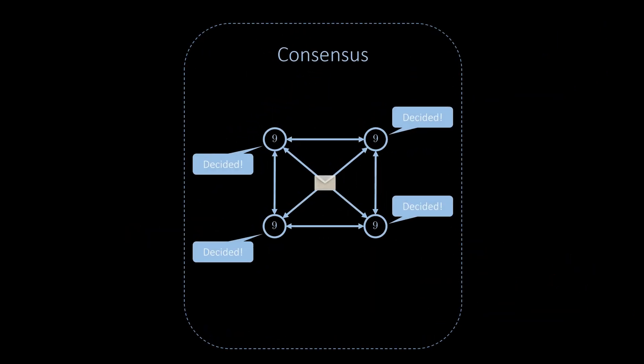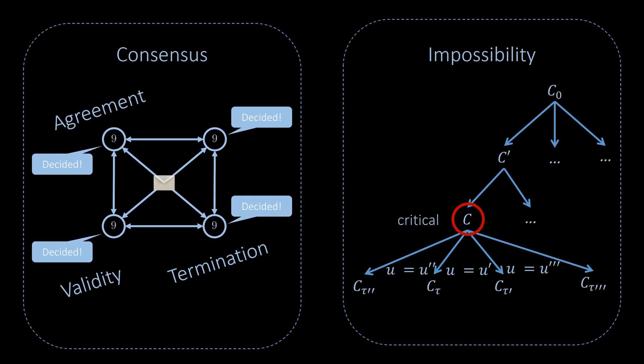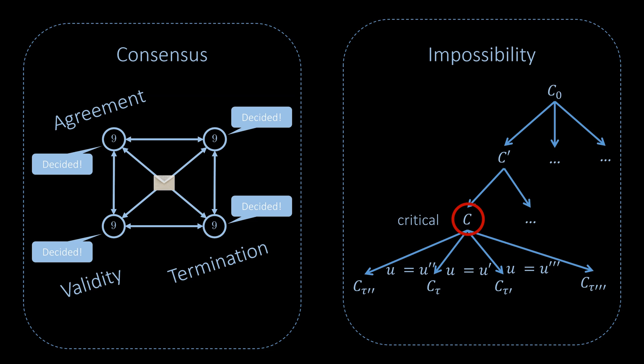Let's summarize what we've learned in this video. We introduced the consensus problem with the three properties: agreement, validity, and termination. We then learned that the problem cannot be solved in the asynchronous model for any deterministic algorithm, even if at most one node fails. This is a fundamental result in distributed computing, as it implies that either algorithms must resort to non-determinism or stronger assumptions about the communication model are needed.